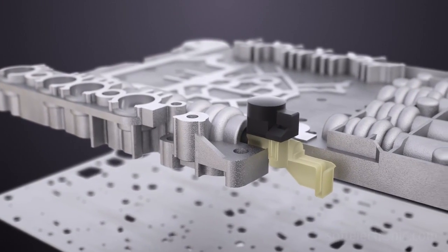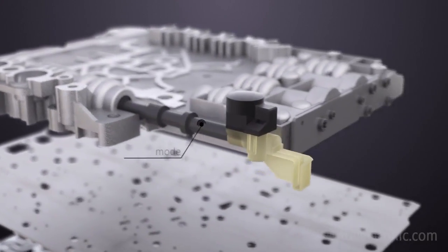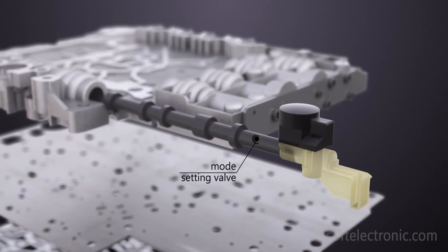In the upper plate is the manual valve, which determines whether the car is in parking, drive, neutral or reverse position.